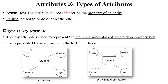The next component is attributes and types of attributes. Attributes describe the properties of an entity. For example, student is an entity, and the different properties of a student — like student ID, student phone number, student age, and student name — are called attributes. These attributes are represented by an ellipse.